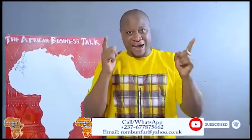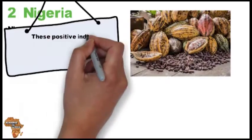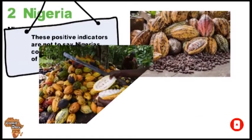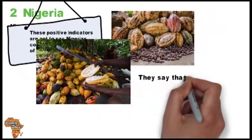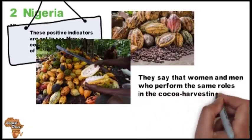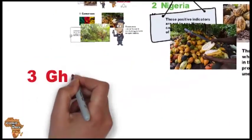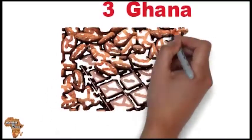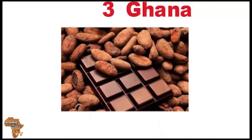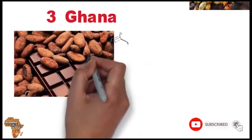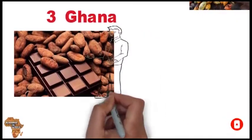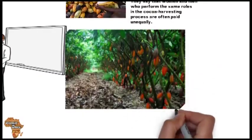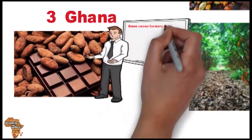Nigeria's cocoa industry has positive indicators, but it is not devoid of trouble. Oxfam has identified a severe lack of gender equality on cocoa farms in Nigeria — women and men who perform the same roles in the cocoa harvesting process are often paid unequally. Number three: Ghana. In Ghana, cocoa is king, with production accounting for just under a sixth of the country's GDP. Over three-quarters of the country's farmers define themselves as smallholder farmers — meaning the cocoa farm is owned and maintained by farmers who live on the property. However, high operational costs are taking their toll on the Ghanaian cocoa industry.